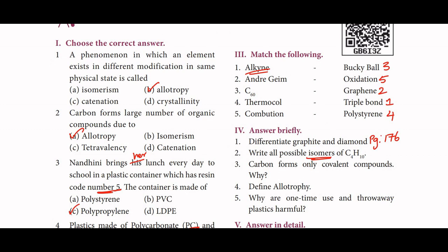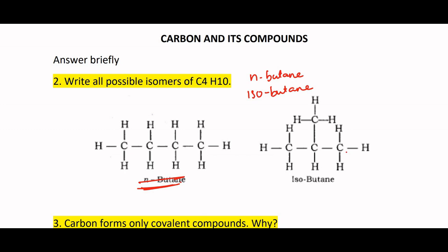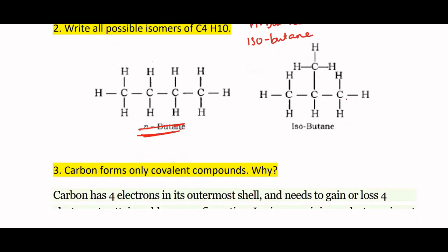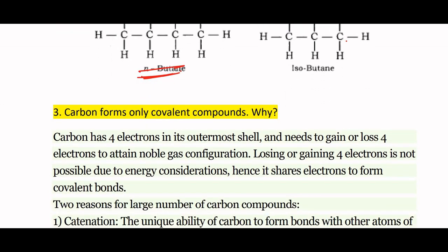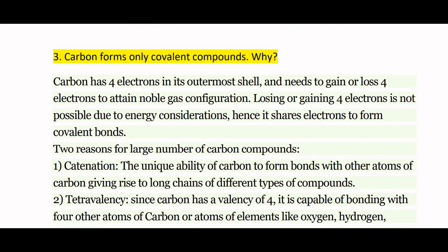Third one: carbon forms only covalent compounds — why? Carbon forms only covalent compounds because carbon has 4 electrons in its outer shell and needs to gain or lose 4 electrons to attain noble gas configuration. Losing or gaining 4 electrons is not possible due to energy considerations. Hence, it shares electrons to form covalent bonds. Two reasons for the large number of carbon compounds are: first, catenation; second, tetravalency.